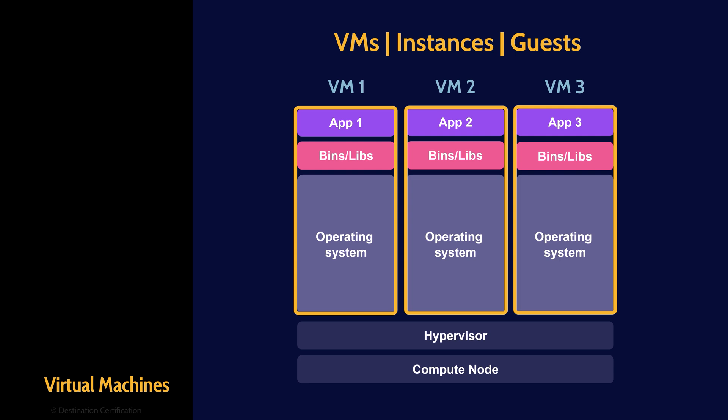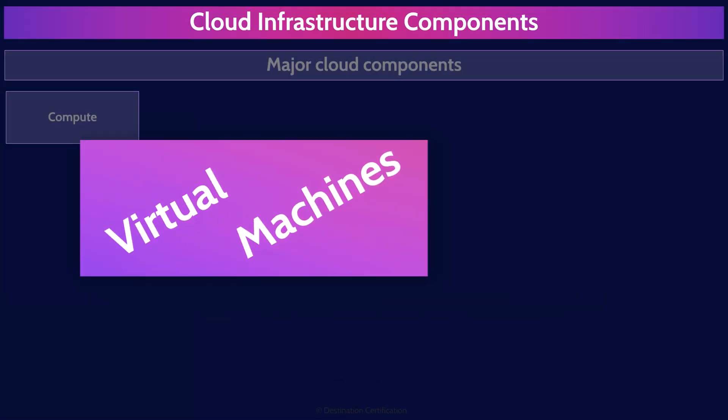This setup allows us to run multiple operating systems and their applications simultaneously on one physical server or compute node. As you can see in the diagram, we have three virtual machines. Watch out on the exam: virtual machines might also be referred to as instances or guests. And a hypervisor might be referred to as a virtual machine monitor or VM monitor.